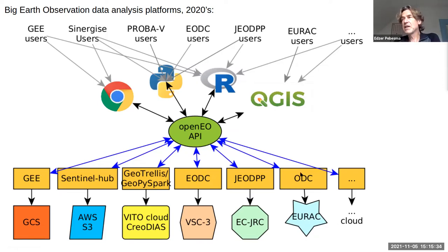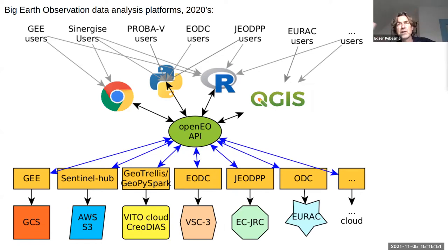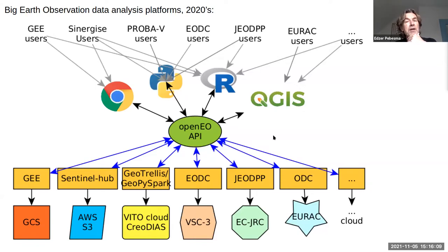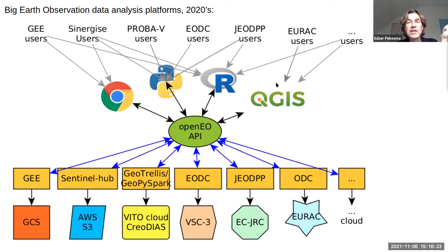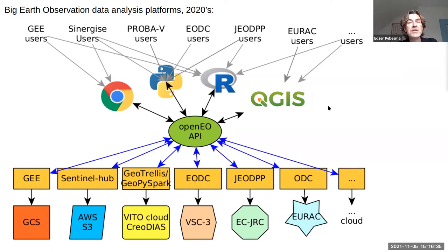All these backends essentially do the same thing — they have image collections and want to do some kind of data cube operations: aggregate temporally, do time series modeling, machine learning, and so on. The functionality overlap across all these platforms is very strong. So once you make your particular backend compatible with this API, you essentially get all the interfaces for free — R users, Python users, interactive graphical modeling in QGIS. It's architecturally similar to the GDAL-for-earth-observation idea.